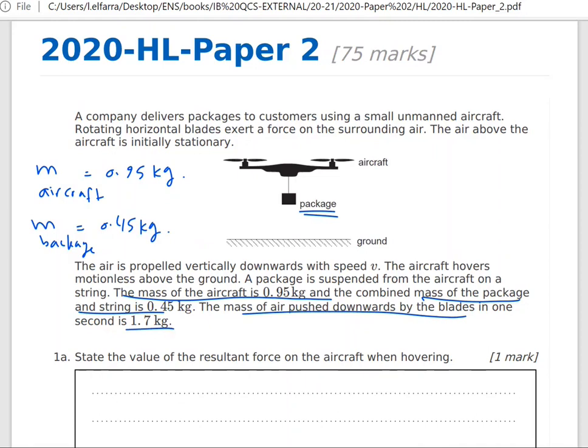The mass of the air is 1.7 kilogram. The forces here: I have mass of the package downward plus the mass of the aircraft, package downward plus aircraft, all of them times g.